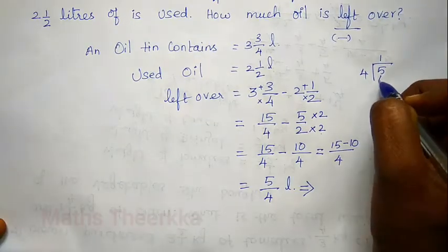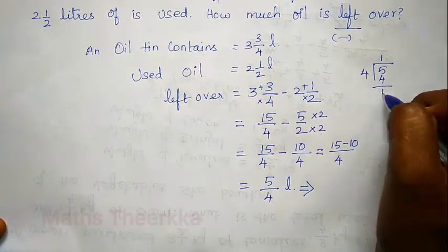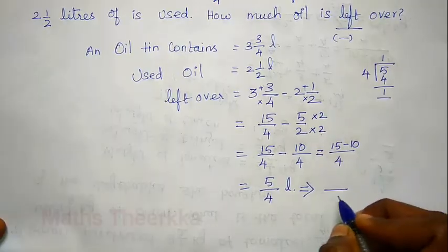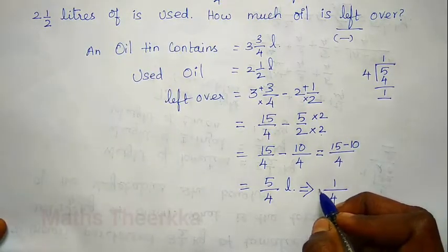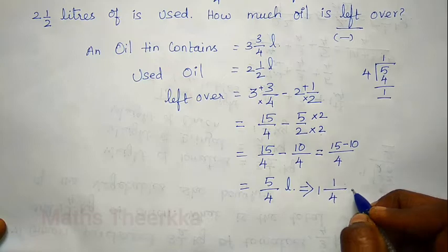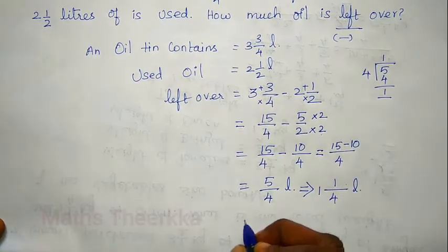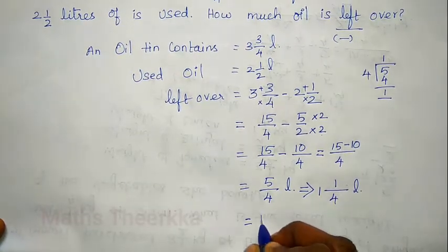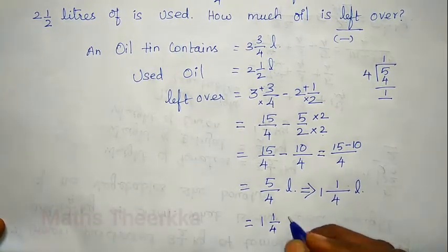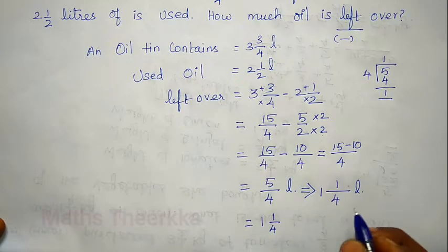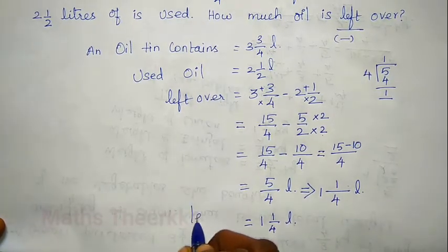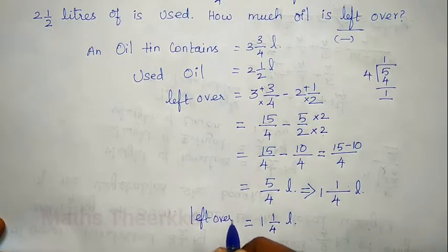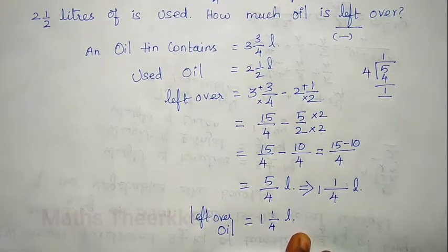Converting 5 by 4: divide 4 into 5, quotient 1, remainder 1. So the mixed fraction is 1 and 1/4. The leftover oil is 1 and 1/4 liters.